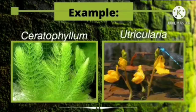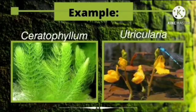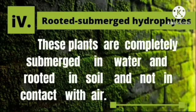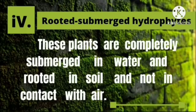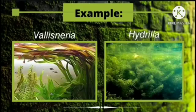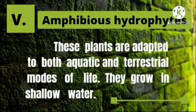Submerged floating hydrophytes: these plants are completely submerged in water and not in contact with the soil or air. For example, Ceratophyllum and Utricularia. Rooted submerged hydrophytes: these plants are completely submerged in water and rooted in soil, and not in contact with air. For example, Vallisneria and Hydrilla.